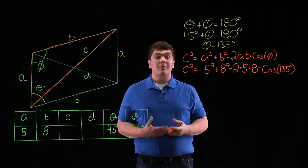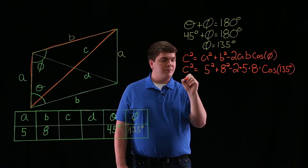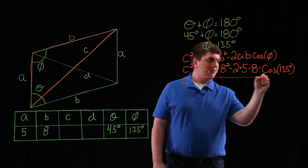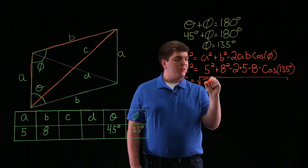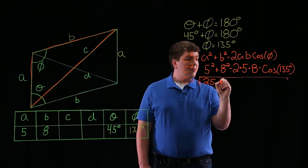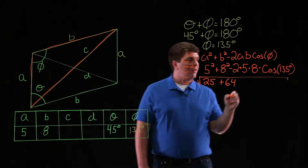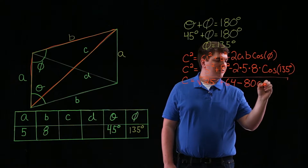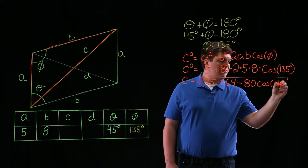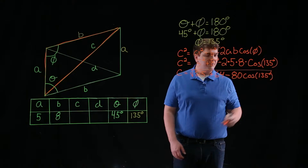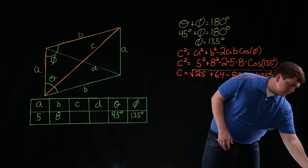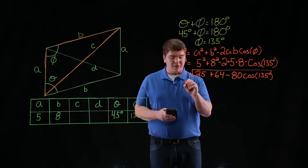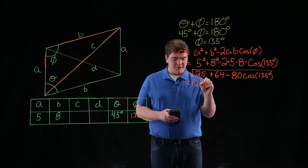Of 135 degrees. So we can solve for C by taking the square root of both sides of the equation, giving us C is equal to the square root of 25, plus 64, minus 80, times the cosine of 135 degrees. Now by using a calculator, we find that C is approximately 12.07.